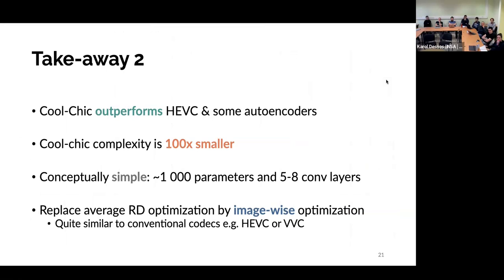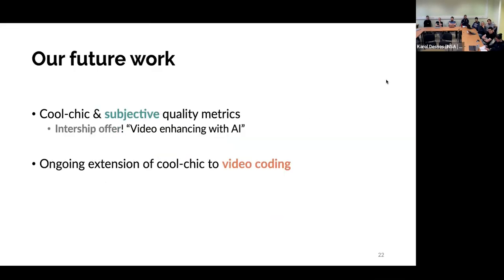So that's the second takeaway. We're both quite good compression-wise and way more efficient at the decoder. We also conceptually simpler, because our decoder is just 1000, 2000 parameters in five to eight convolutional layers, according to the architecture that we have chosen. And so it's very easy to implement. We just need to implement a convolution and that's it. We have our decoder. And all of that is allowed by the fact that we've replaced the average rate distortion optimization by an image-wise optimization, which is actually quite similar to what's done in HEVC or VVC.